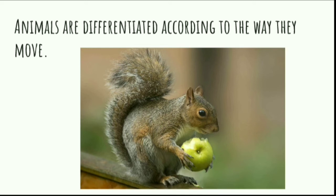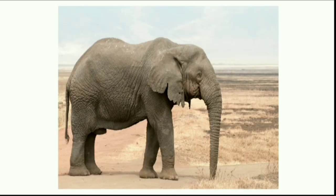Animals are sometimes differentiated according to the way they move. The squirrel has a very light body and is very small in size, which allows it to hop, jump, and run at a great speed. The elephant, on the other hand, has a bulky body with thick legs, which do not allow it to run fast.